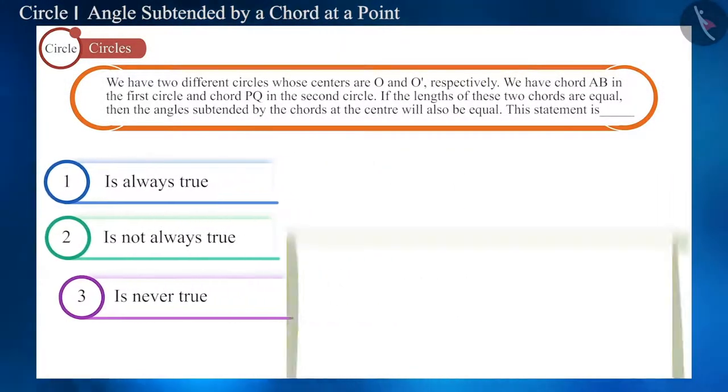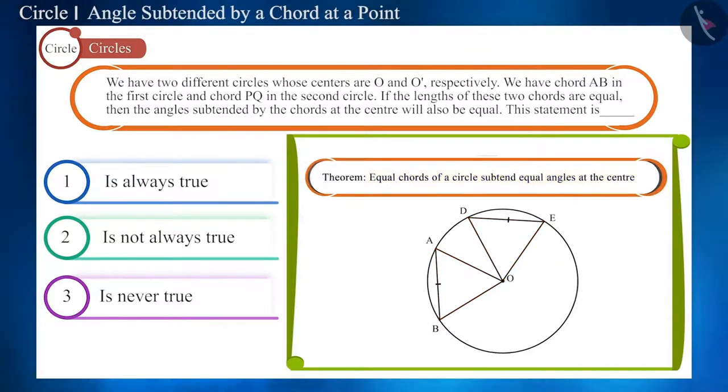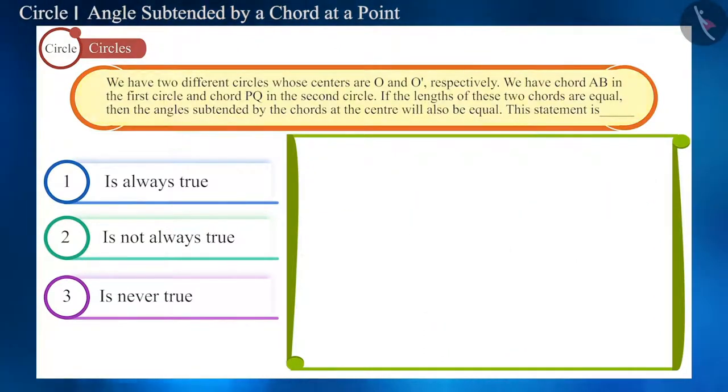Let's see. We know that equal chords of a circle subtend equal angles at the center. In this question, we are given two equal chords, but in two different circles. We have not been given any information about their radius.